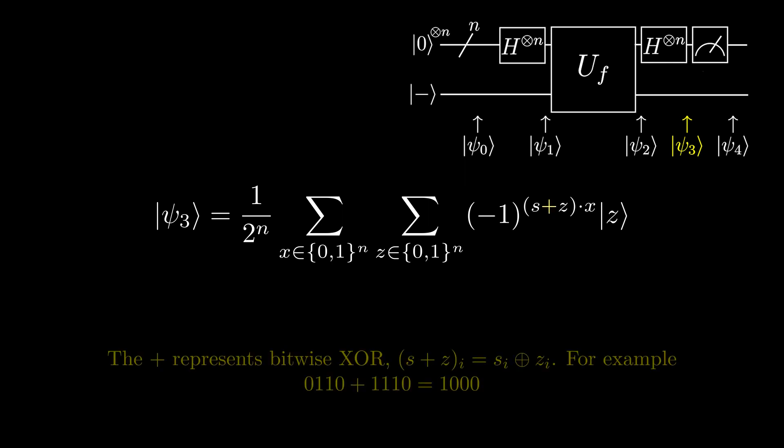The plus indicates bitwise exclusive or, so for each bit in s, we exclusive or it with the bit in z that is in the same position. So the i-th position of s plus z is s_i exclusive or with z_i. This gives us another bit string of length n.